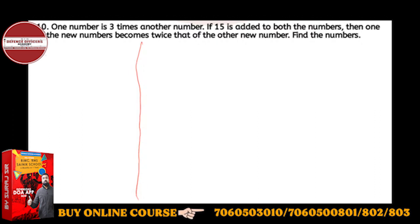Let one number be n1 and another number be n2. Suppose n1 is three times n2. If 15 is added to both the numbers, the condition becomes n1 plus 15 and n2 plus 15.